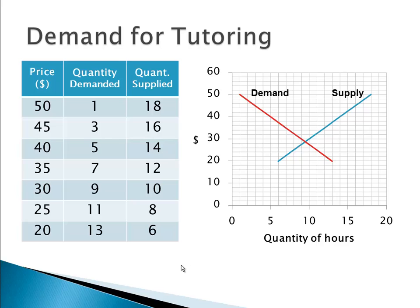Now the other relationship we have — not only demand, we also have supply. Supply goes in the opposite direction. Demand is decreasing because the higher the price, the less number of people want it. But supply goes the other way: if you're in an area where everybody can charge $30 per tutoring, you might have a few people offering 10 hours. But if you find an area willing to pay $50 per hour for tutoring, you're going to have more math tutors willing to supply more hours. As the price goes up, quantity goes up for supply. Supply is an increasing graph, demand is a decreasing graph.